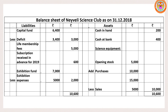Balance Sheet of Naiveli Science Club as on 31st December 2018. Year-end closing balance: cash in hand and cash at bank — 200 and 400 from the payment side. For science equipment, look at the third adjustment: opening value of science equipment was 5,000; during this year science equipment purchased — so total asset is 15,000; from this, 5,000 value of science equipment was sold: 15,000 minus 5,000 gives year-end science equipment value of 10,000.